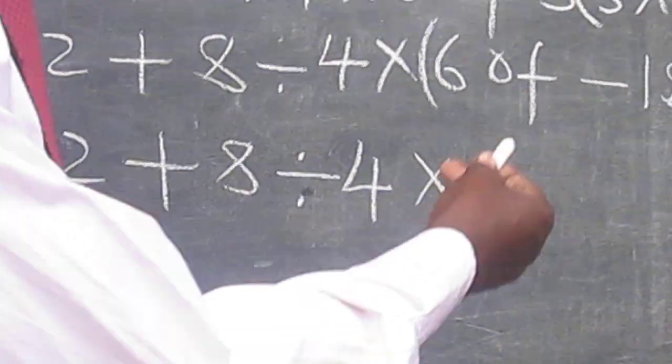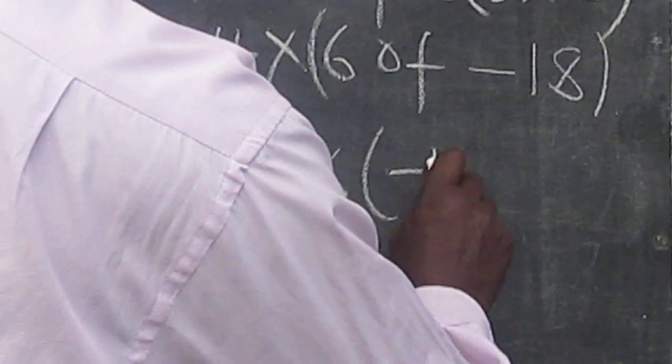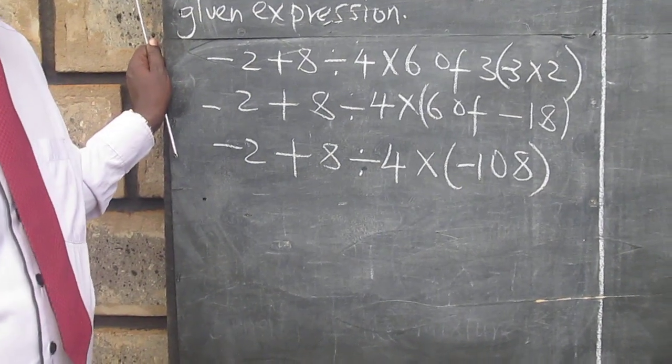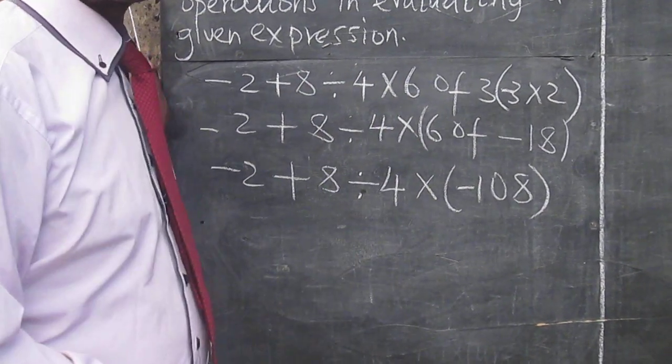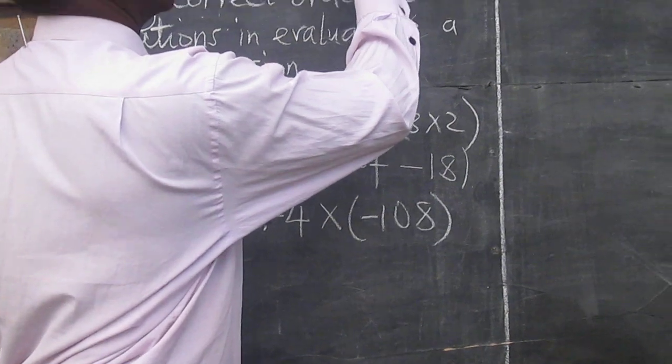Times negative 18, which will give us negative 108. We can see that our expression is becoming simpler and simpler. And now we need to go to the next operation.